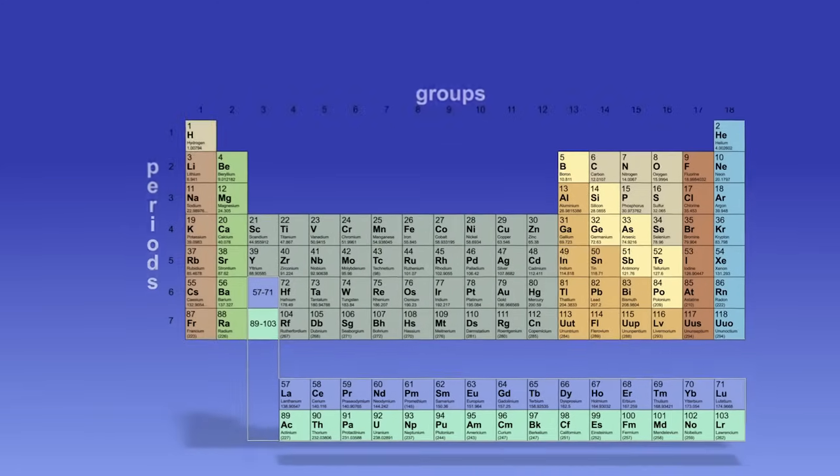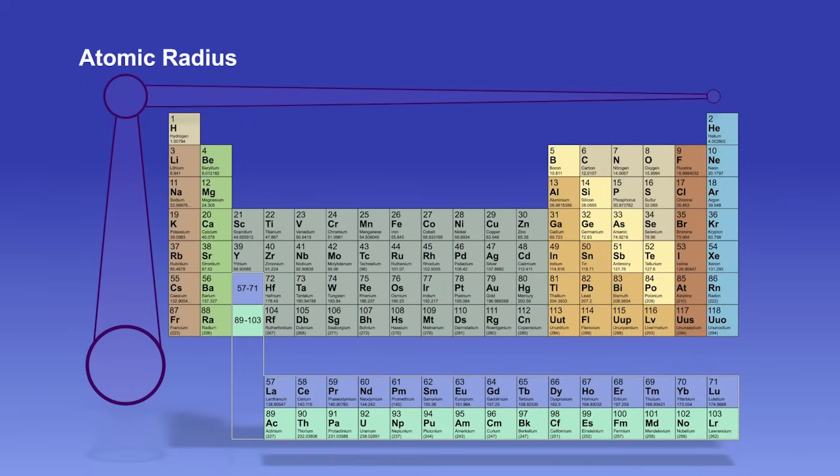Another trend you will notice is the size of the atom, or the atomic radius. As you move down through the periods, the atoms become larger, increasing the atomic radius. As you move from left to right across the groups, the atoms become smaller, decreasing the atomic radius.